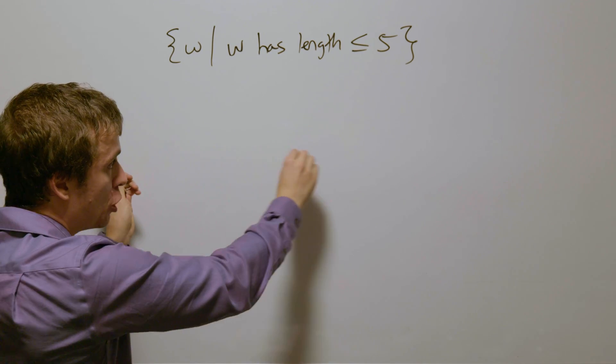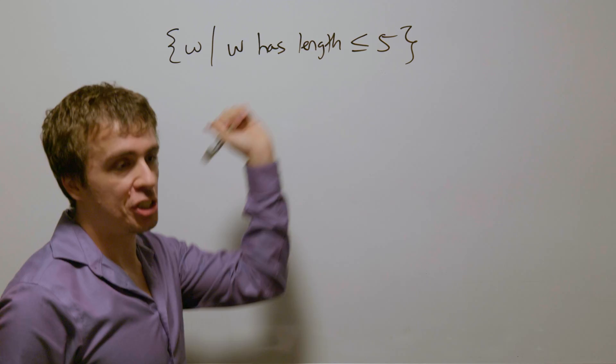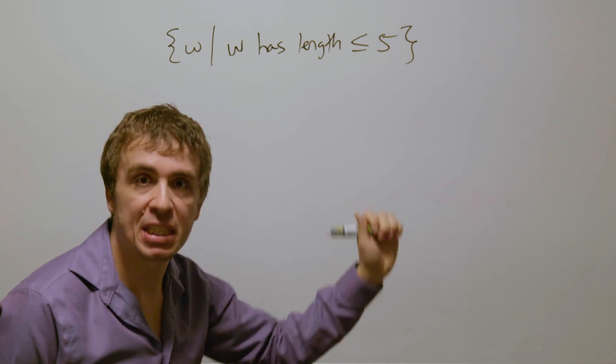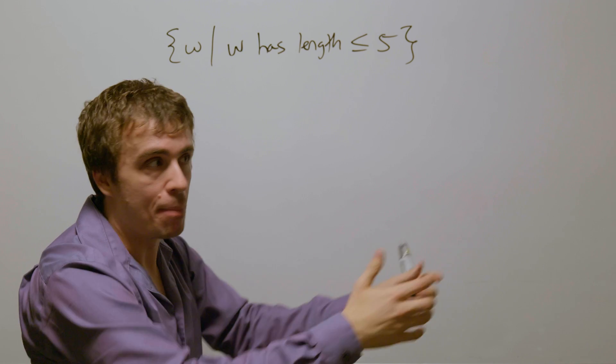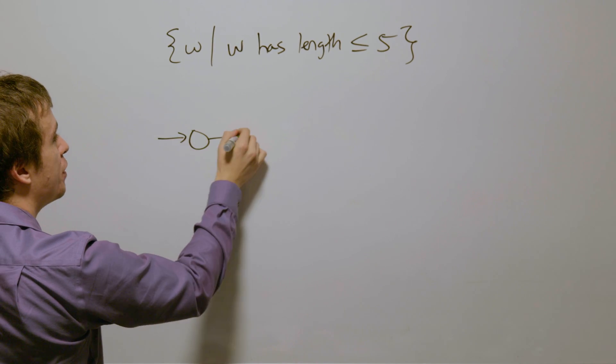and some state that represents the sixth character that we've read, which means we're not going to accept at that point. So we need to make a whole bunch of states in a row.